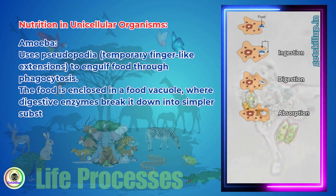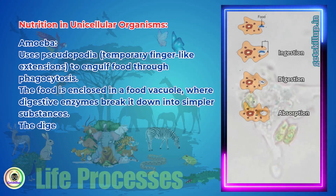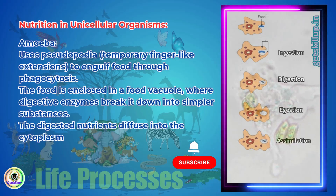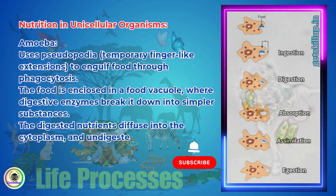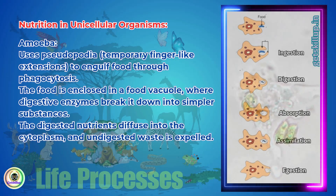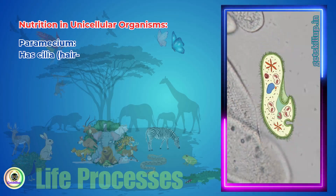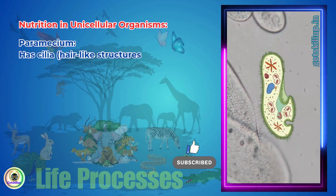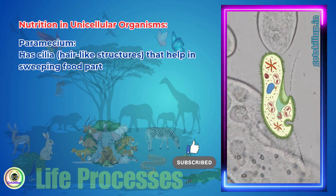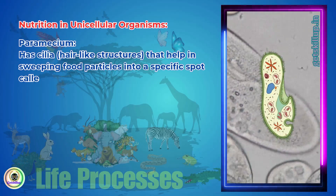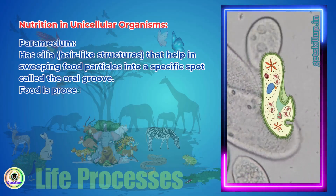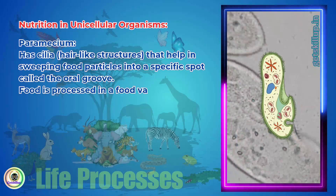The digested nutrients diffuse into the cytoplasm and undigested waste is expelled. Paramecium has cilia — hair-like structures — that help in sweeping food particles into a specific spot called the oral groove. Food is then processed in a food vacuole.